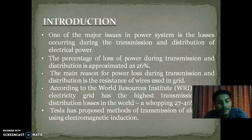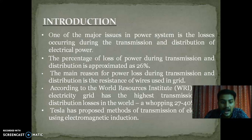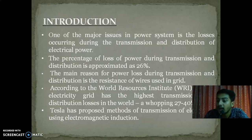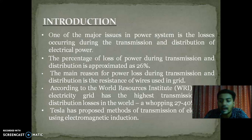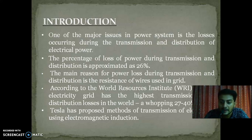According to the World Resources Institute, short termed WRI, India's electricity grid has the highest transmission and distribution losses in the world, a whopping 27% to 40%, greater than the world average. Tesla has proposed methods of transmission of electricity using electromagnetic induction, and in introduction, let me say our country's situation.